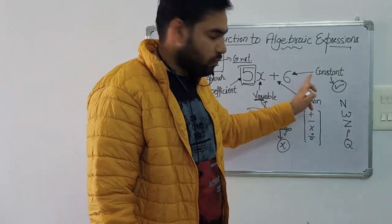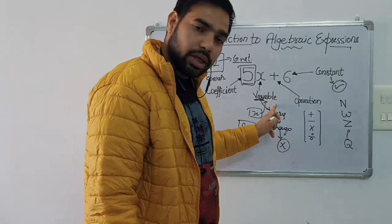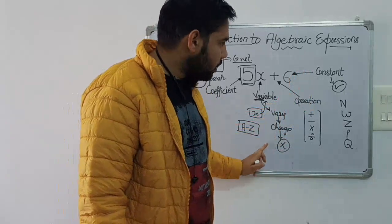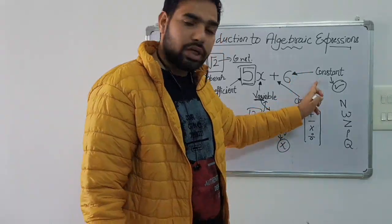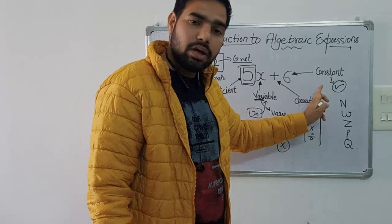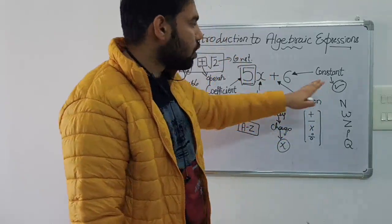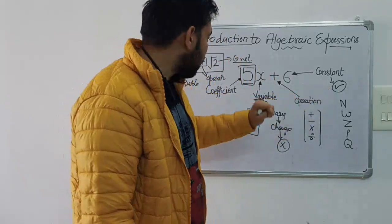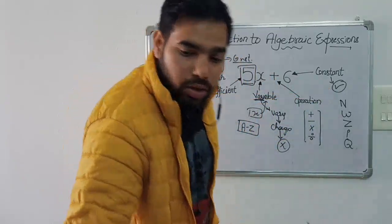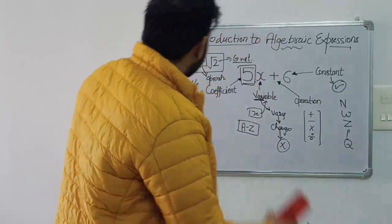To summarize: a coefficient is something that is multiplied or divided by a variable, a variable is something whose value is not fixed, and a constant is something whose value is fixed.